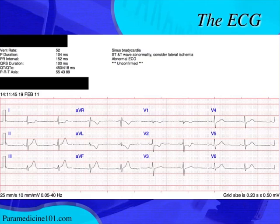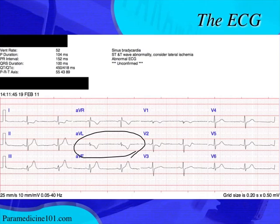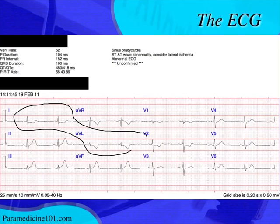A hyperacute T wave has a broad, wide base and is tall and symmetrical. This is indicative of a hyperacute T wave, and you see them in leads II and AVF as well — AVF has about half a millimeter of ST elevation. This ST depression with T-wave inversion in AVL, this down-scooping pattern, is one of the earliest signs of inferior wall MI. You also have ST depression in lead I, which is contiguous with AVL — these are reciprocal changes of an inferior wall MI.